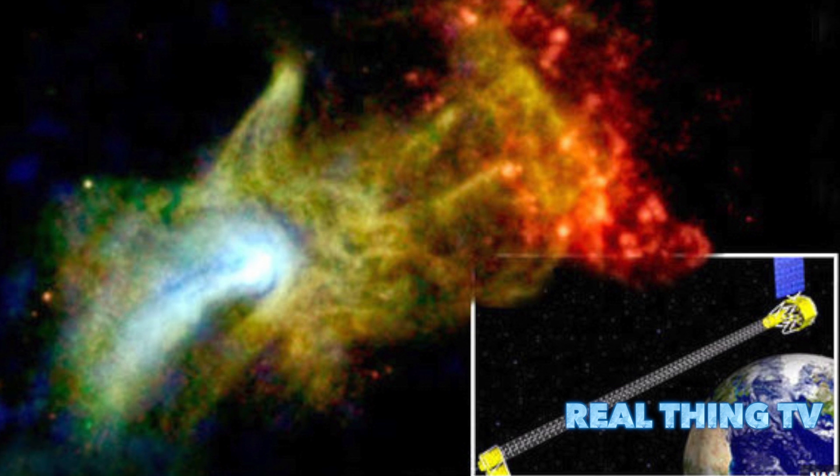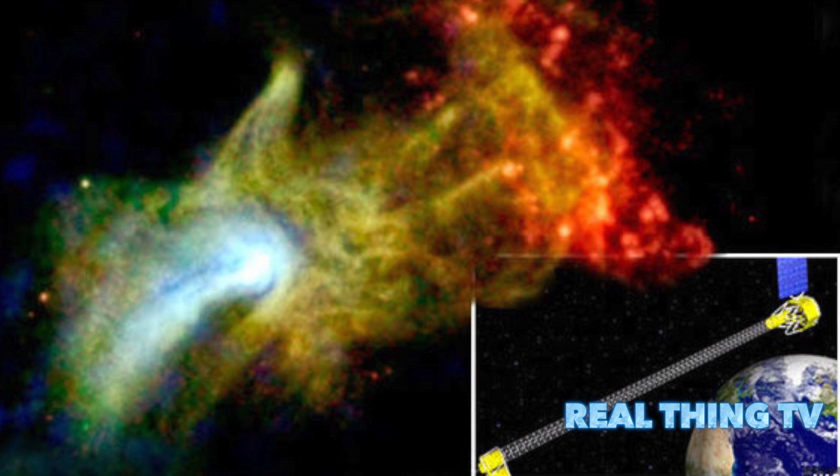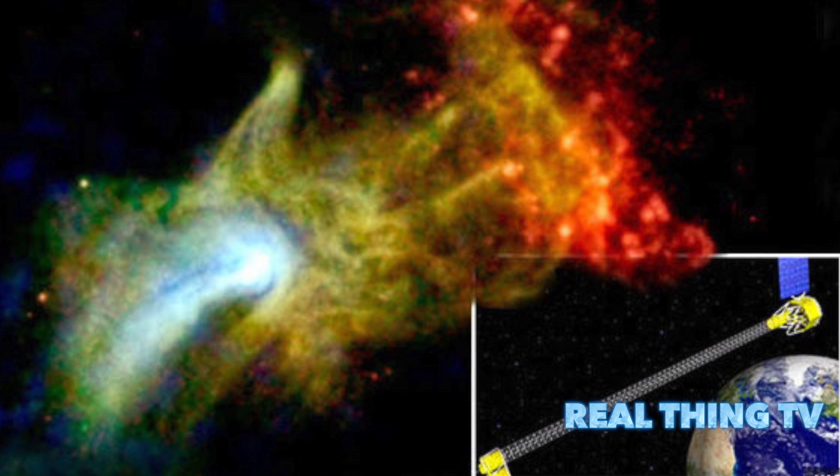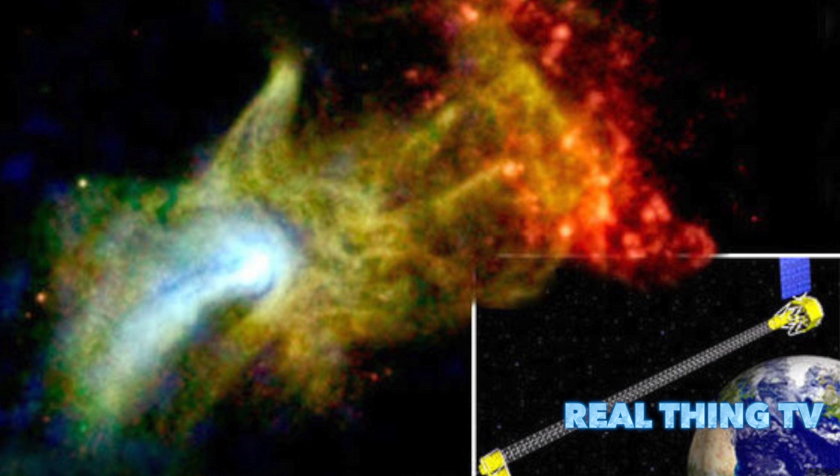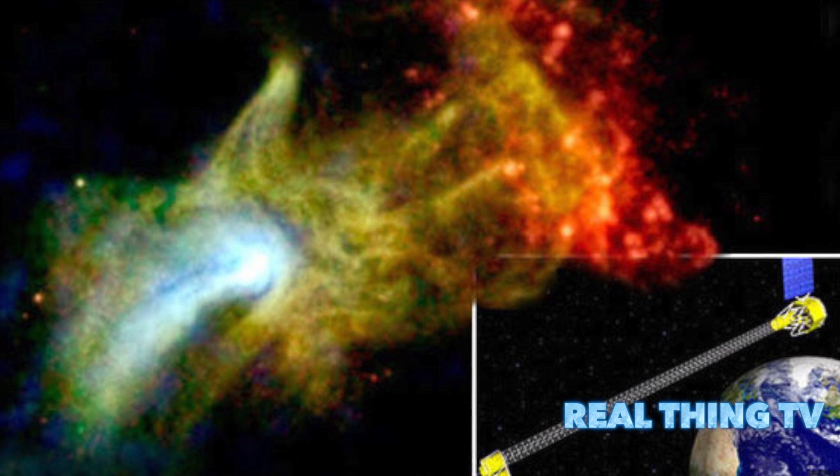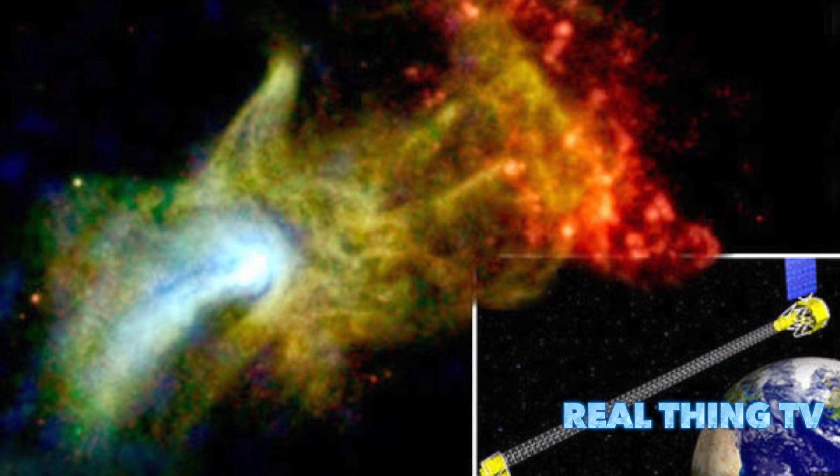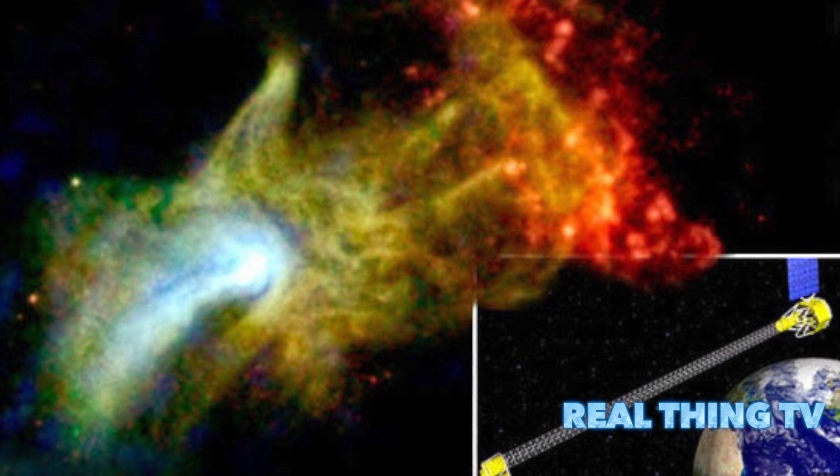The space agency's nuclear spectroscopic telescope array was aimed at a pulsar, or neutron star, called PSRB 1509-58, a staggering distance from Earth. What they sent back was a spectral vision of an outstretched hand which has become known as the hand of God.